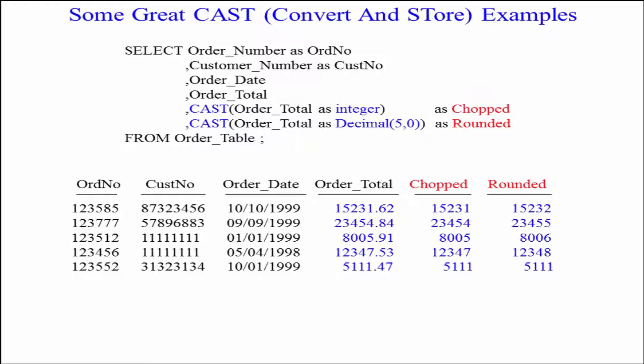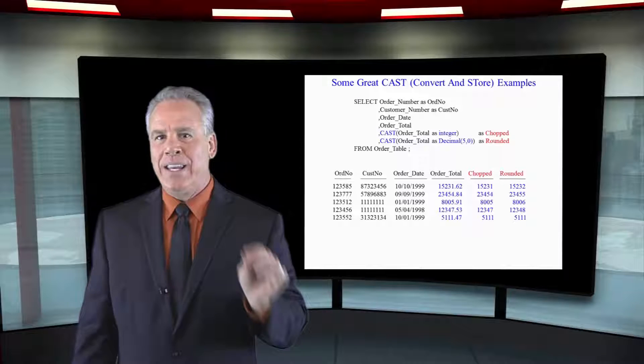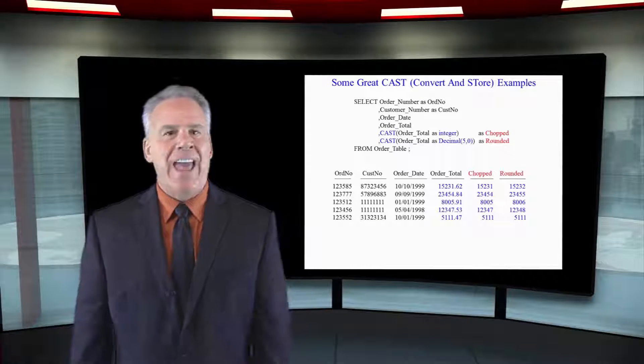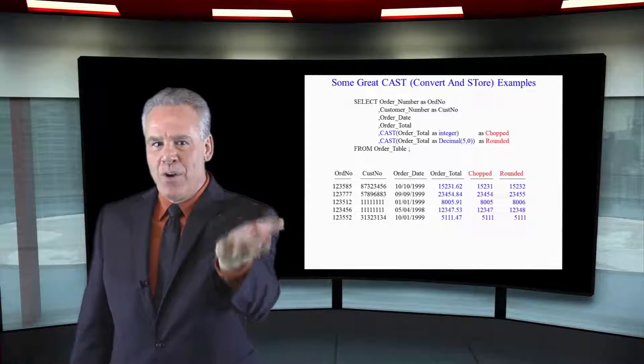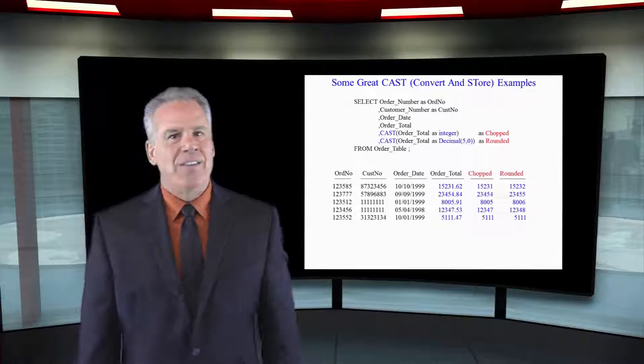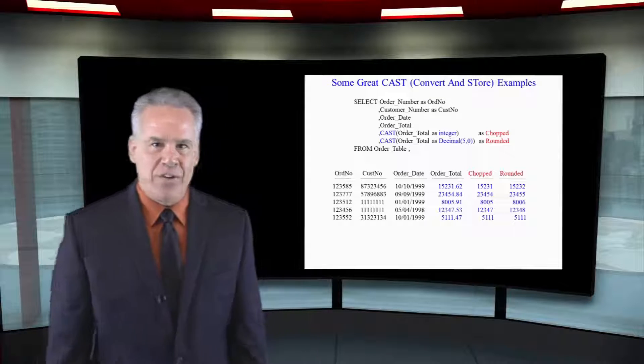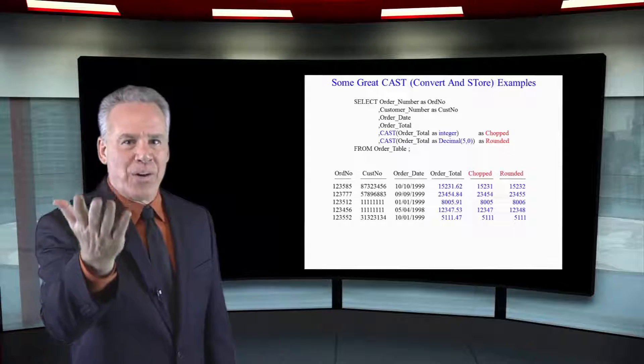You can see the order total in blue, and then next to that is the chopped column, and here we have cast the order total as an integer. It just merely chops the decimal places off. But let's take a look now at the rounded, because in the rounded, we cast that order total as a decimal five comma zero. So it is either going to round up or round down based on the decimal positions, and if that value is greater than 50 or lower than 50.